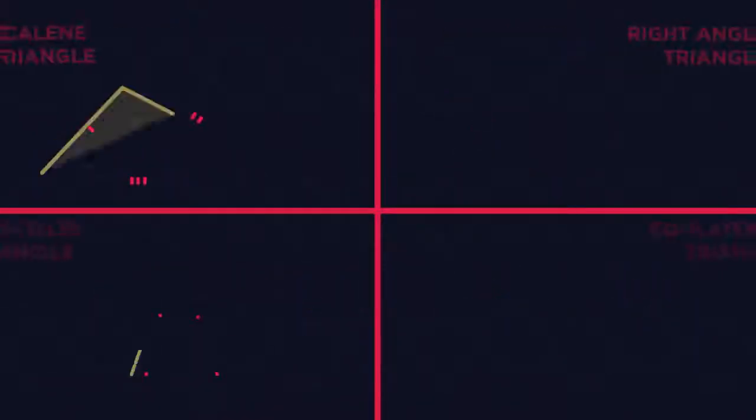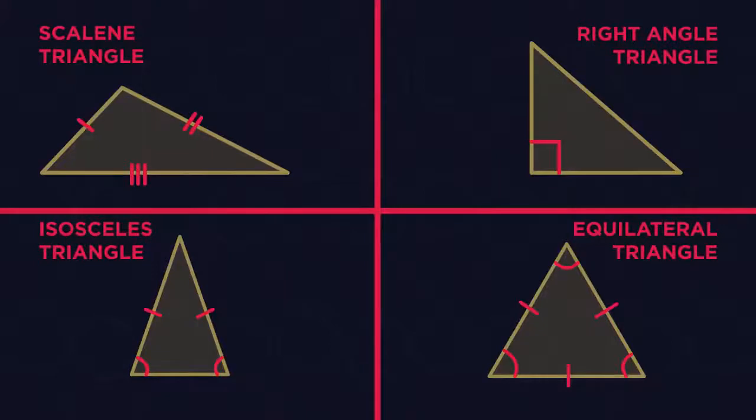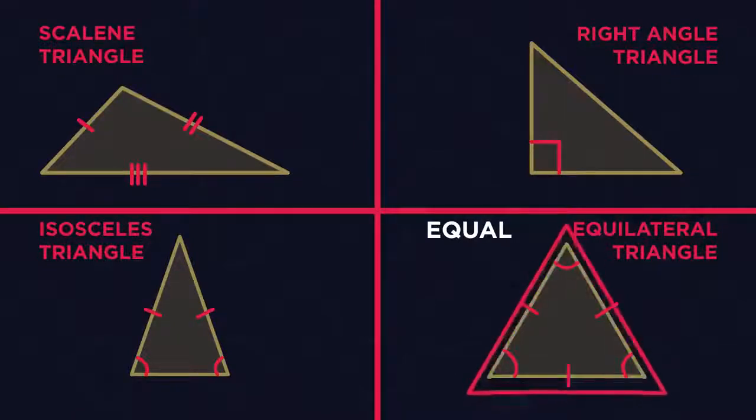The only tricky part to this is remembering the different names. Equilateral is easy. It sounds like equal. All sides and angles are equal.